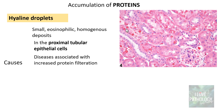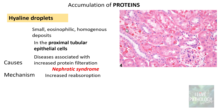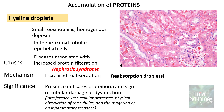The causes of hyaline droplets are any condition with increased protein filtration, such as all causes of nephrotic syndrome, which is associated with massive proteinuria. The mechanism is increased reabsorption of these proteins into the proximal tubular epithelial cells, which is why they are also called reabsorption droplets. Their significance is that their presence signifies proteinuria and tubular damage, as the accumulation interferes with cellular processes, can physically obstruct the tubule, and can trigger an inflammatory response.